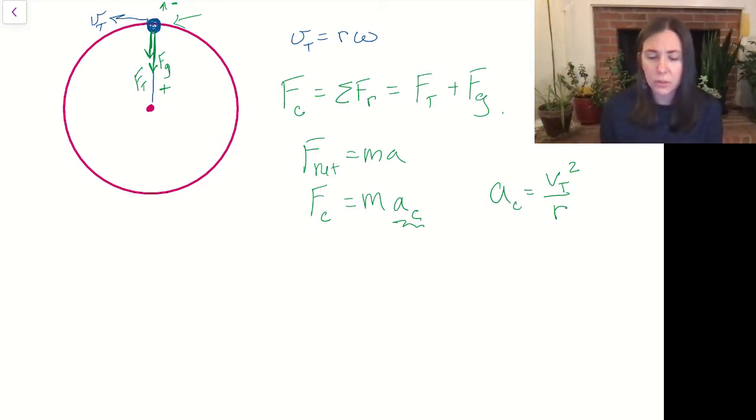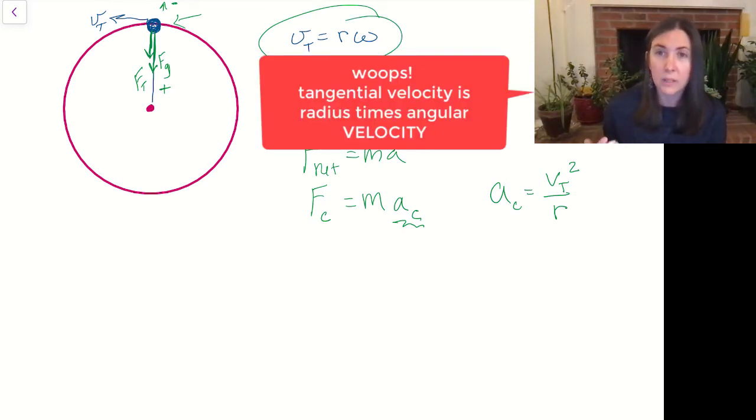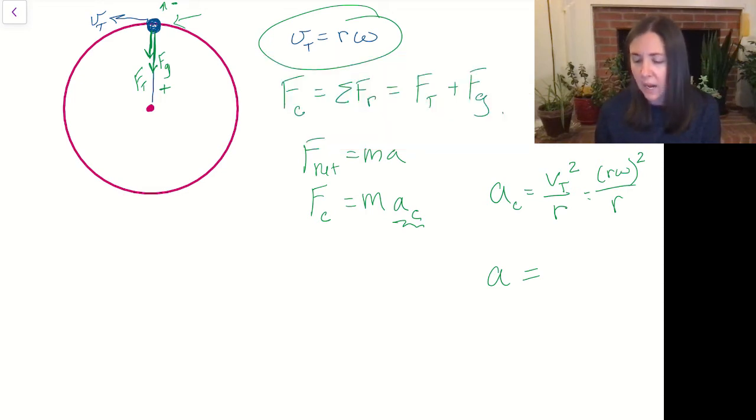You can also use this velocity tangent is radius times the angular acceleration to come up with the centripetal acceleration in terms of omega or in terms of the angular speed or angular velocity as being just omega squared times R is our centripetal acceleration.